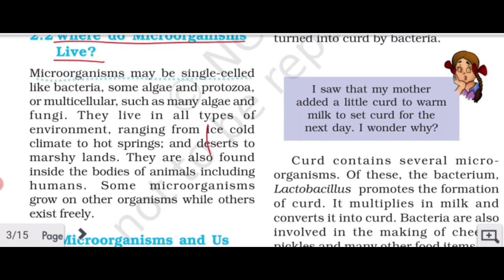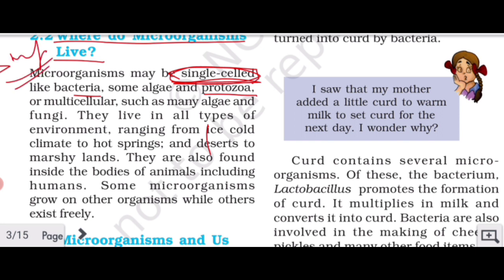Microorganisms may be single-celled, like bacteria, some algae, and protozoa, or multicellular, such as many algae and fungi. The microorganisms that are single-celled have just one cell — bacteria, some algae, and protozoa are all single-celled microorganisms. This is a very important point: you need to remember the names of single-celled and multicellular microorganisms.